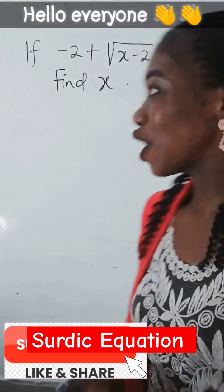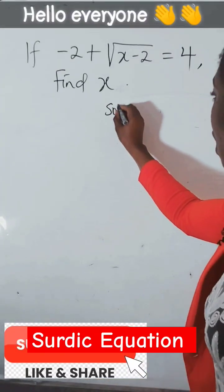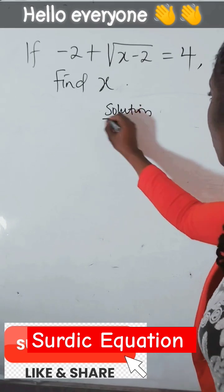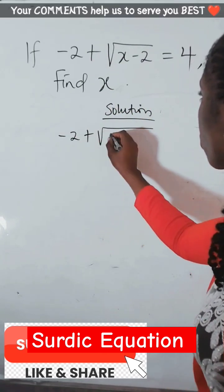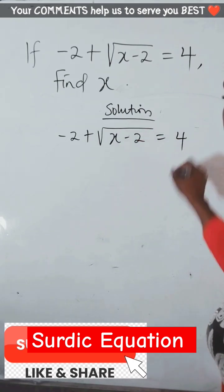Can you solve this? Watch. So what we do here, if you're going to have a solution, we have -2 + √(x - 2) = 4.